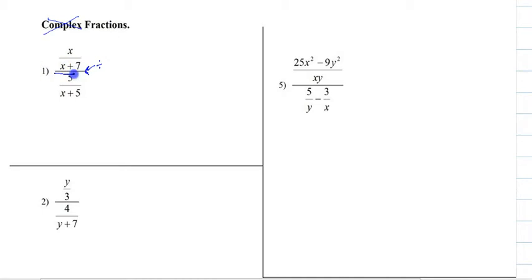I like to double line it just to give us a nice clean indication of where it is. So what that means is we have x over x+7, and that's being divided by 5 over x+5. Whenever we're dividing a fraction, we're supposed to flip it.